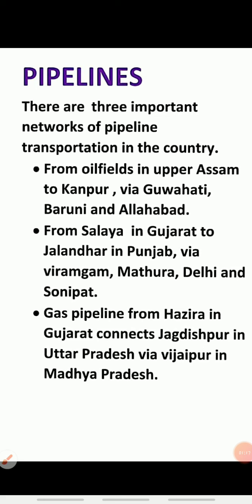There are three important networks of pipeline transportation in the country. The first is from oil fields in upper Assam to Kanpur in Uttar Pradesh, via Guwahati, Baruni and Allahabad. It has branches from Baruni to Haldia via Rajband, Rajband to Marugram, and Guwahati to Siliguri.